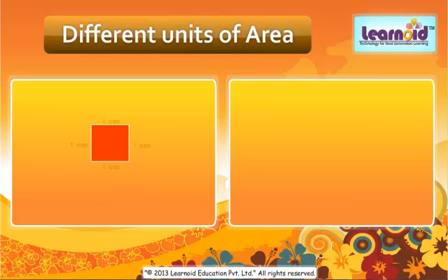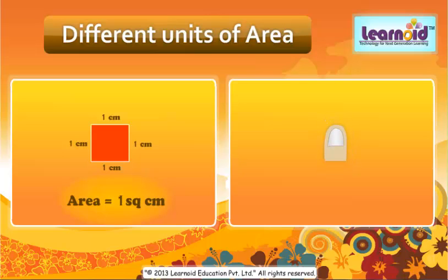A square with one centimeter sides is a square centimeter. For example, a fingernail is about one square centimeter.